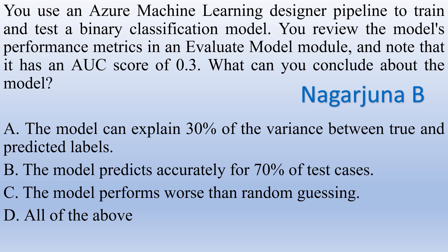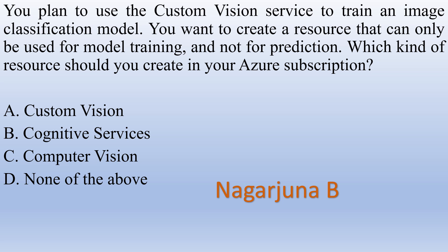You use an Azure Machine Learning designer pipeline to train and test a binary classification model. You review the model's performance metrics in an Evaluate Model module and note that it has an AUC score of 0.3. What can you conclude about the model? Option A: The model can explain 30 percent of the variance between true and predicted labels. Option B: The model predicts accurately for 70 percent of test cases. Option C: The model performs worse than random guessing. Option D: All of the above. The right answer is the model performs worse than random guessing.